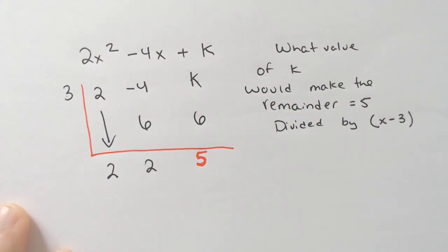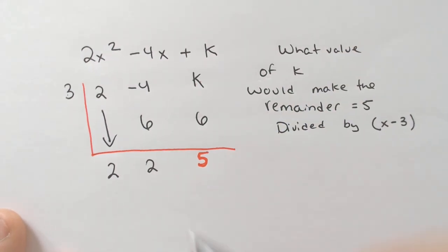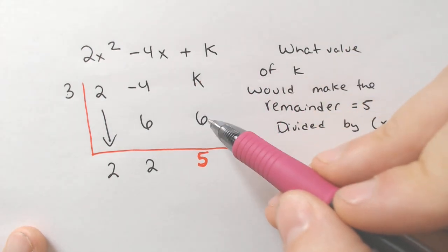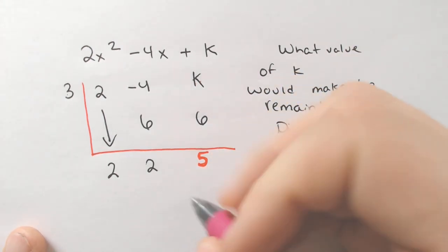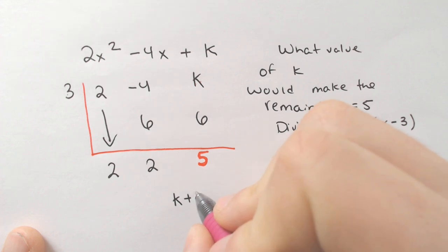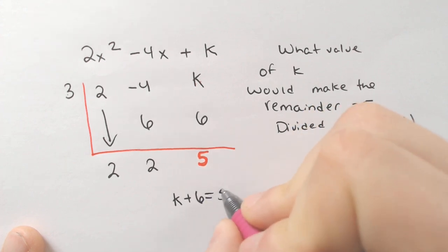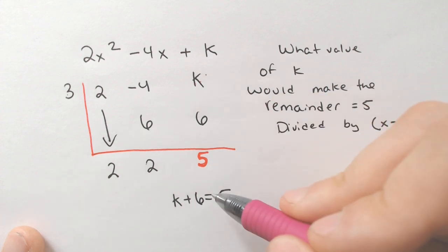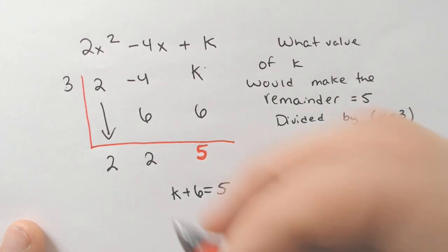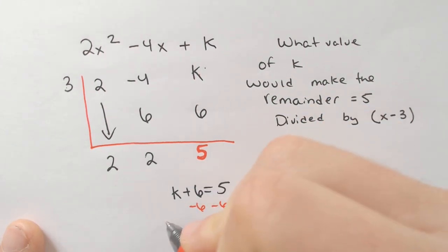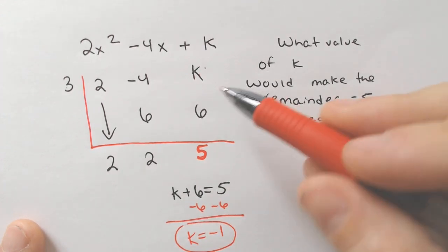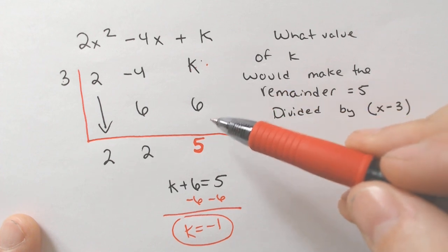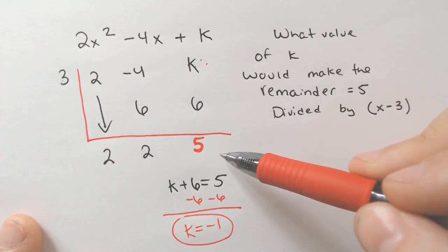But we do know that apparently the remainder has to be 5, and if the remainder is 5, then we just have to ask ourselves, K plus 6, if that equals 5, you could set up an equation, because K and 6 have to add, they would have to add together to equal 5, and if you subtract 6, you would get K is equal to negative 1, which makes sense, because negative 1 plus 6 does in fact equal 5.